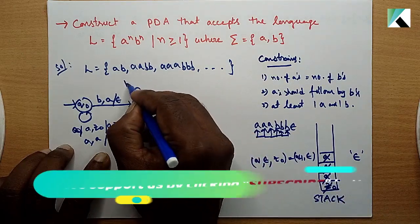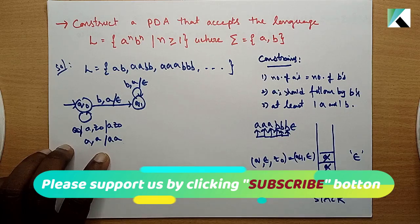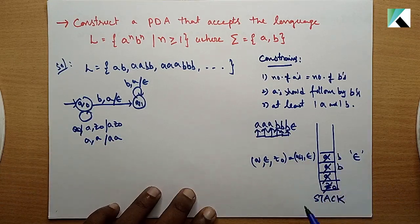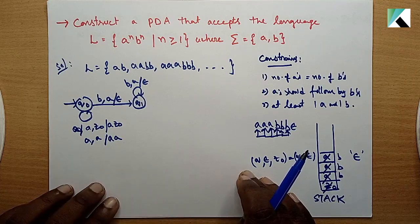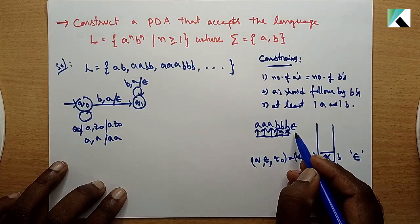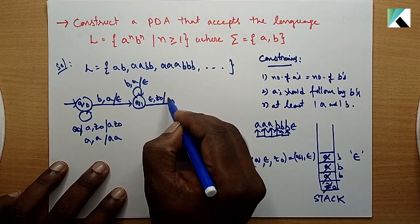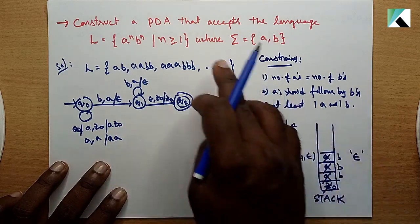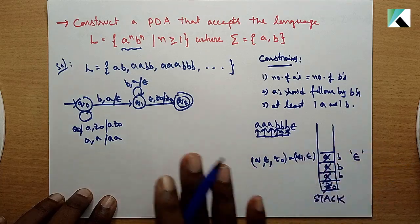In state Q1, when we read B, we perform the POP operation - we cancel the A on top of the stack. Likewise we cancel all A's by popping for each B. Finally we reach the empty stack with only Z-naught remaining. That is the final state. So this is the way we create the pushdown automaton for the language a^n b^n.